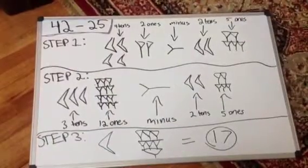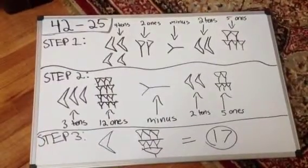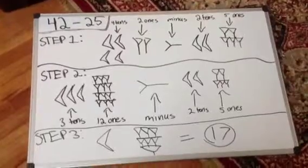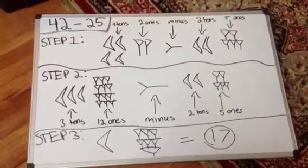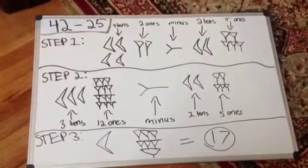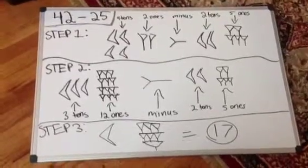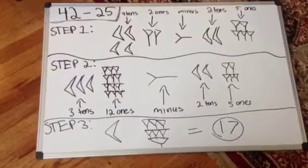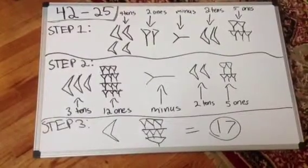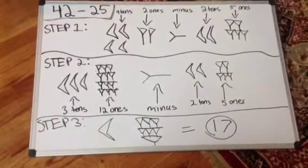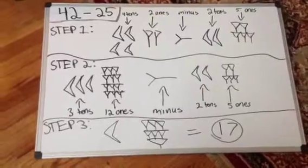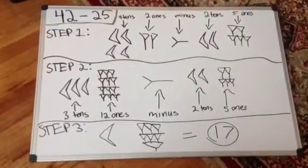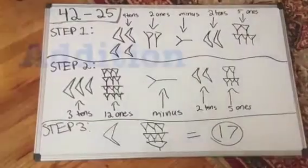As you can see in step 1, there are enough tens in 42 to subtract with the tens in 25. However, there are not enough ones in 42 to subtract with the ones in 25. So step 2 shows the breaking down of one of the tens and adding it to the 1 column to make 3 tens and 12 ones, minusing the 2 tens and 5 ones in 25. Then you do your subtraction and you get your answer: 1 ten and 7 ones, or 17.